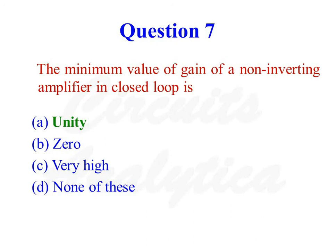The minimum value of gain of a non-inverting amplifier in closed loop is unity. The gain of a non-inverting amplifier is given as 1 plus RF divided by R1. So if RF is equal to 0 and R1 is equal to infinity, the gain is equal to 1. The minimum value of gain of a non-inverting amplifier in closed loop is unity. So the correct answer is option number 1.